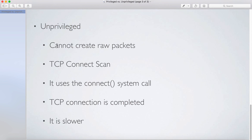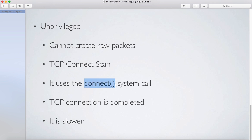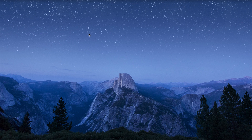If you're running nmap on a system where you don't have root access, you cannot create raw packets, which means you cannot create half-open connections. What it does instead is create a TCP connect scan, meaning it tries to establish a full three-way handshake — it sends a SYN, receives a SYN-ACK, and then sends an ACK. It uses the connect system call, so the connection is fully completed. Because the full three-way handshake completes, it can take a little more time, which is why it can also be slower.